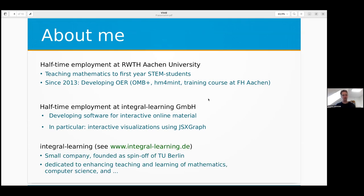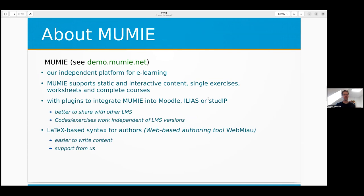Integral Learning is a small company, founded as a spinoff of TU Berlin. We are dedicated to enhancing teaching and learning, mainly mathematics and computer science. Mumia is our platform where we have this online material. It supports static and interactive content, like interactive visualizations, single exercises which are automatically corrected, and complete courses like the online mathematics bridge course. We also have a plugin so you can integrate this Mumia material into Moodle, Ilias, or STUD.IP.